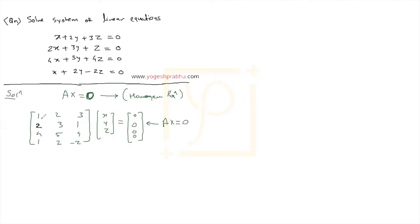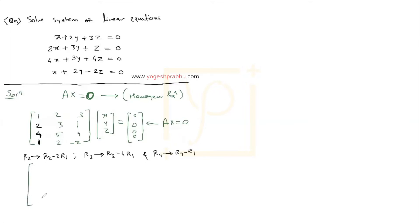To make the second row's first element zero, we do R2 becomes R2 minus 2·R1. To make the third row's first element zero, we do R3 becomes R3 minus 4·R1. To make the last one zero, we do R4 becomes R4 minus R1. After performing all these operations, the first row remains as 1, 2, 3 and the right-hand side column is all zeros throughout.